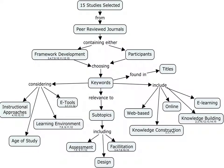Methods: 15 studies were selected from 12 peer-reviewed educational technology journals. To figure as part of the analysis, the journal sources had to include research participants or framework development. Keywords included knowledge building, knowledge construction, web-based, online or e-learning. Other considerations included age of the studies, which ranged from 2006 to 2012, with one study from 1999 which was considered of value due to its focus.